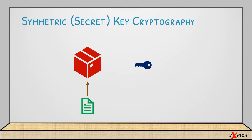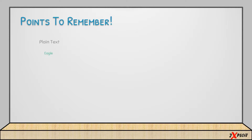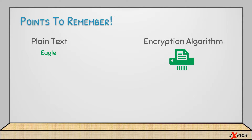There are some important points you should know about symmetric key cryptography. The first one is plain text. Plain text is the raw data or clear text that anybody can easily read and understand. For example, the word 'eagle' — it is easy for anyone to read and understand, so this is plain text.